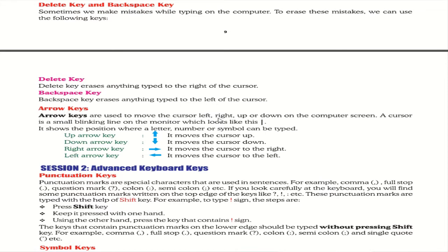Arrow keys are used to move the cursor left, right, up, and down on the computer screen. A cursor is a small blinking line on the monitor. The Up Arrow moves the cursor up, Down Arrow moves it down, Right Arrow moves it right, and Left Arrow moves it to the left.